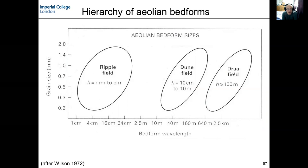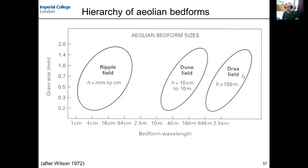Aeolian bedforms are wind-blown ripples and dunes. They occur at different scales. This graph shows grain size on the vertical axis, the wavelength of the bedforms on the horizontal axis, and several highlighted areas showing where specific types of aeolian bedform are developed.